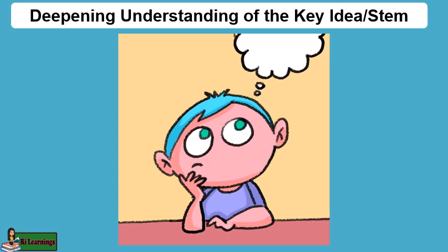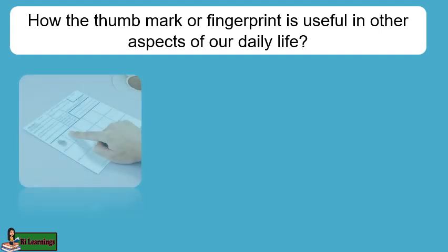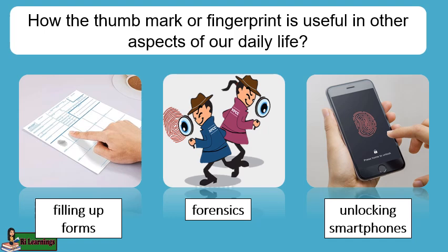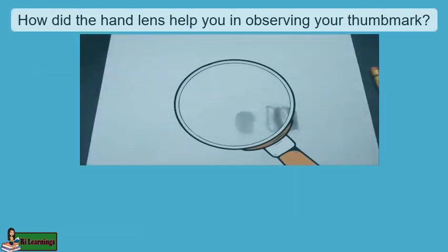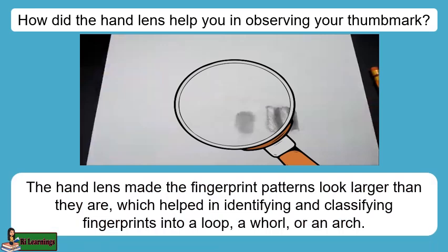How is the thumb mark or fingerprint useful in other aspects of our daily life? Which of the materials we used in the activity helped you observe your fingerprint more closely? How did the hand lens help you in observing your thumb mark? The hand lens made the fingerprint patterns look larger than they are, which helped in identifying and classifying fingerprints into a loop, a whorl, or an arch.